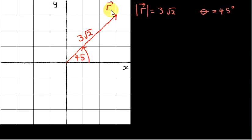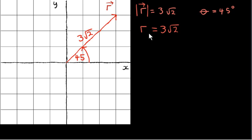Here we have a vector r in the ij plane. Its length or magnitude, which is denoted by putting vertical lines on either side of the vector, is 3 root 2. However, very often we will just show the letter without an arrow to represent the magnitude of the vector. In this video I want to make it clear that a letter without an arrow on it refers to the magnitude of the corresponding vector. This quantity is not a vector — it's a scalar.